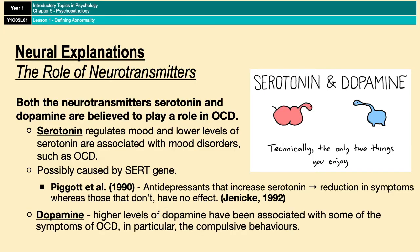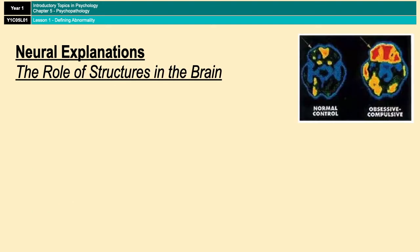Dopamine, on the other hand, is slightly less well-researched. However, animal studies have suggested that high levels of dopamine are related to compulsive behaviours that are symptomatic of OCD. Finally, we have the role of certain structures in the brain - this also comes under neural explanations for exam questions.